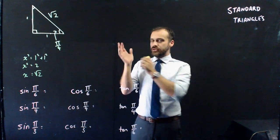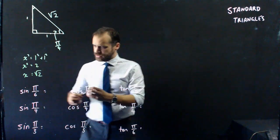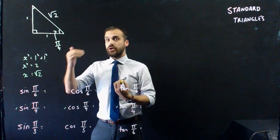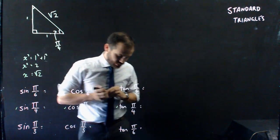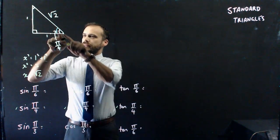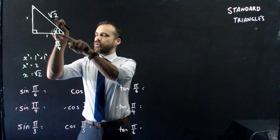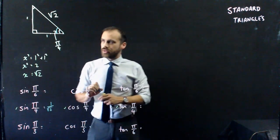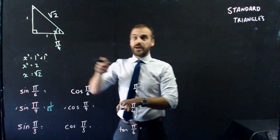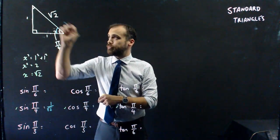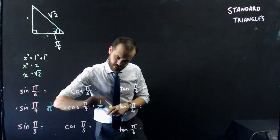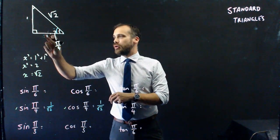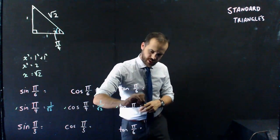There are two of them. Using that standard triangle, we can do something pretty awesome — we can answer this question, this question, and this question. Remember that sine of anything is opposite over hypotenuse. So let's use the angle pi on 4: opposite over hypotenuse, that's 1 over root 2. Cos is adjacent over hypotenuse — adjacent over hypotenuse — that's 1 over root 2. And finally, tan pi on 4 is equal to opposite over adjacent, 1 over 1. 1 divided by 1 is 1.